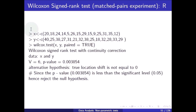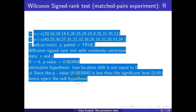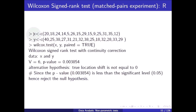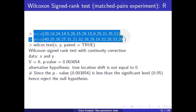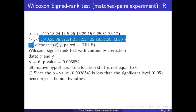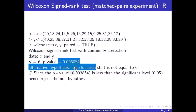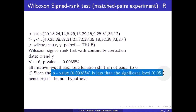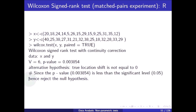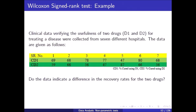For the R implementation, the x data and y data are defined, and the Wilcoxon signed rank test function is called. The p-value obtained is less than the significance level, hence we reject the null hypothesis.